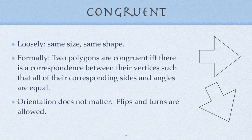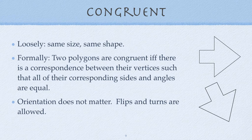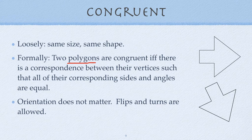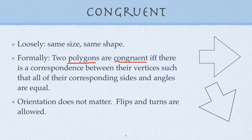What does the word congruent mean? Informally it means same size, same shape. Formally in geometry, we write: two polygons are congruent if and only if there is a correspondence between their vertices such that all of their corresponding sides and angles are equal. Let me underscore the important parts: they've got to be polygons, they are congruent if and only if—that means this goes forwards and backwards—there's got to be a correspondence between their vertices so that corresponding sides and angles are equal.